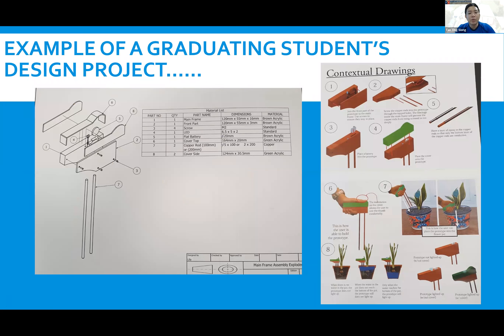Students will then produce working drawings before making the actual prototype, and show how their idea works through graphical presentation. In Masterling, D&T students have opportunities to be trained and use CAD software like Autodesk to help in their projects. The samples shown are produced using Autodesk Inventor.